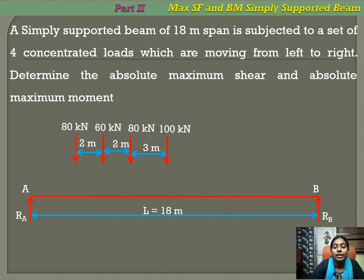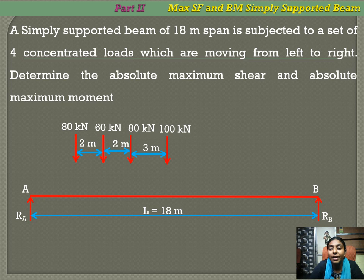This problem involves a simply supported beam with a span of 18 meters and a train of loads: 80 kN, 60 kN, 80 kN, and 100 kN. The distances between loads are 2 meters between the first and second, 2 meters between the second and third, and 3 meters between the third and fourth. We are asked to find the absolute maximum shear and absolute maximum moment.